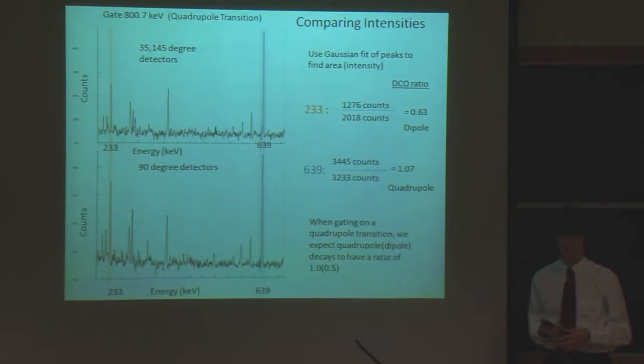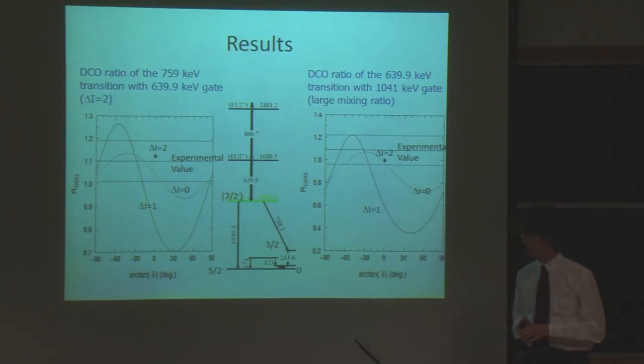So to measure the intensities, all we do is look at the different areas of the counts that you see using a Gaussian fit and then just divide them. So that will give us an experimental value for the DCO ratio. And then we also plug in what we expect to see as our theoretical value of DCO ratios.